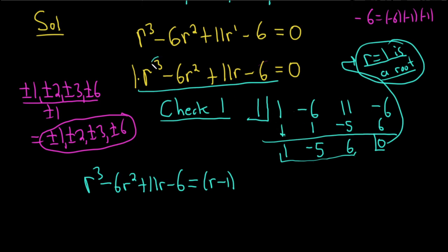So this is a 3, so you start at 1 less. So r squared minus 5r plus 6. So always 1 less. So if this was a 4, you start at r cubed. If this is a 7, you start at r to 6. That's equal to 0.